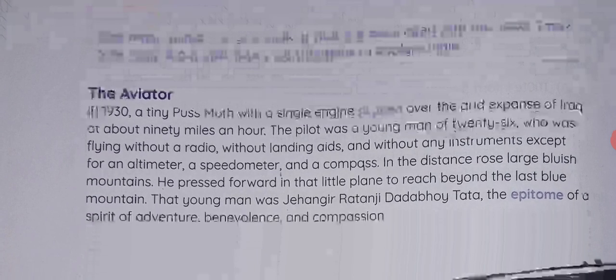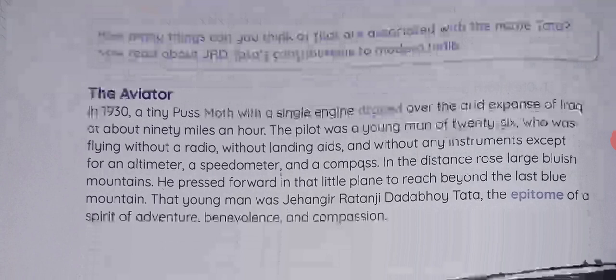Let's start the story: 'The Aviator.' Underline the word 'aviator' — it means pilot, the one who flies an aeroplane or helicopter. In 1930, a tiny Puss Moth with a single engine drones over the arid expanse of Iraq at about 90 miles an hour. Underline 'Puss Moth' — it is actually an insect, but here it represents an early-model aircraft whose structure resembles an insect, which is why the name was given.